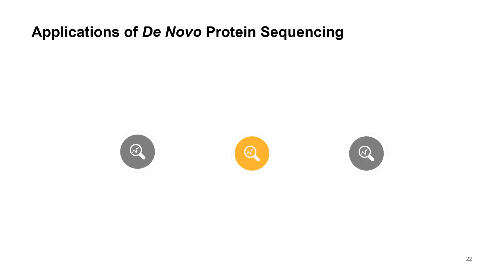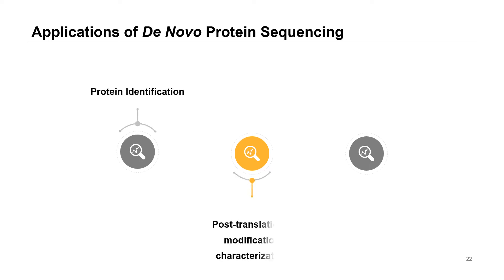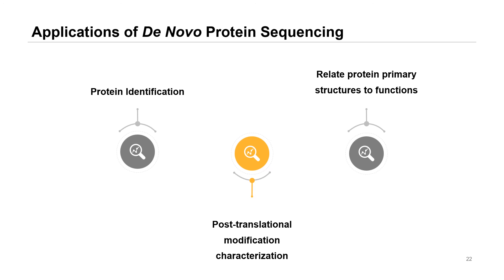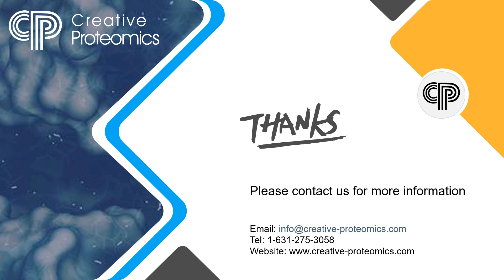De novo protein sequencing can be applied to: identification of proteins, characterization of post-translational modifications of proteins, and analysis of the relationship between protein primary structure and function. Creative Proteomics can provide peptide profiling and de novo protein sequencing analysis. We can provide advice and services on proteomics sequencing according to your needs. Please contact us for more information.